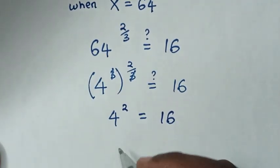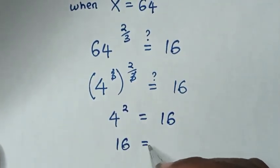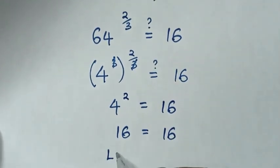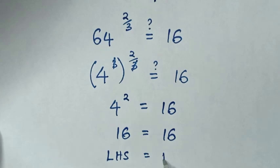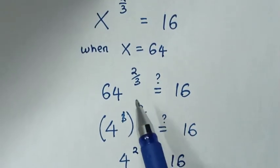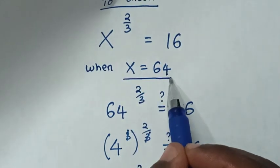Whereas 4 to the power of 2 is 16 equals 16. Then left hand side equals right hand side. Therefore it's true for the value of x equals 64.